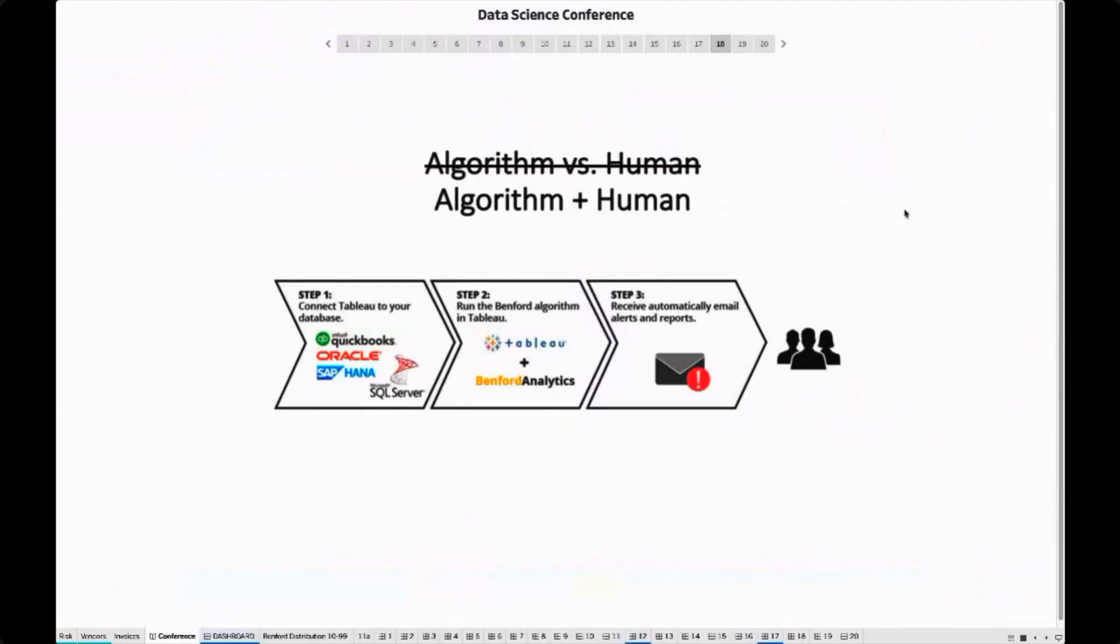Last but not least, automation can make domain experts more effective. In this example, in step one, we get our invoices from our database. In step two, the algorithm scans all invoices automatically and in near real time. And in step three, we get automatically an alert if the algorithm detects a potential fraud. In other words, all the mundane work is done by the algorithm. However, once the algorithm triggers an alert, the domain expert takes over. So it is not algorithm versus human, but rather algorithm and human, which probably delivers the most effective results.